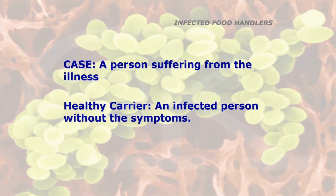There's probably going to be a question on what is a healthy carrier. A case of food poisoning is a person suffering from the illness. A healthy carrier is an infected person without the symptoms — they're carrying the food poisoning bacteria but not showing any symptoms, probably because they have some immunity to it. However, they can pass the infection on to other people via food.